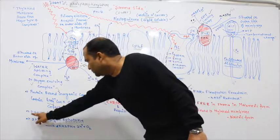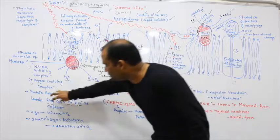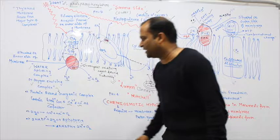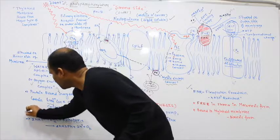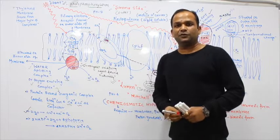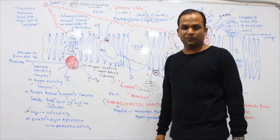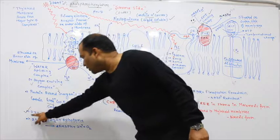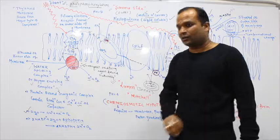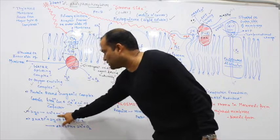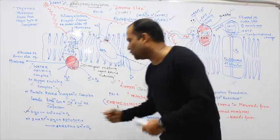This 4 manganese complex combines with 2 water molecules instead of 1. These 2 water molecules undergo splitting, producing 4H+ plus 4 electrons plus 1 molecule of oxygen.